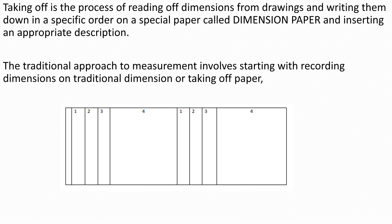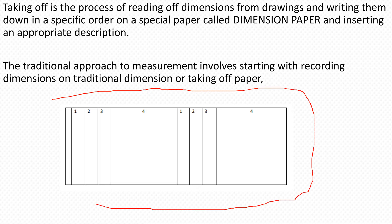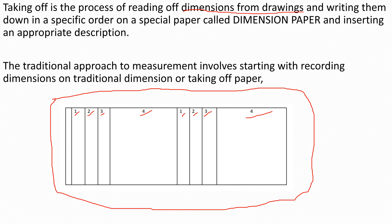Here on our screen you can see our takeoff sheet. Whenever you are taking off, you are required to divide your paper into columns. We have the first, second, third, and fourth columns. Taking off happens on the dimension paper — we write down dimensions obtained from drawings. When you get those dimensions from the drawing and insert them into the dimension paper, that process is called taking off.